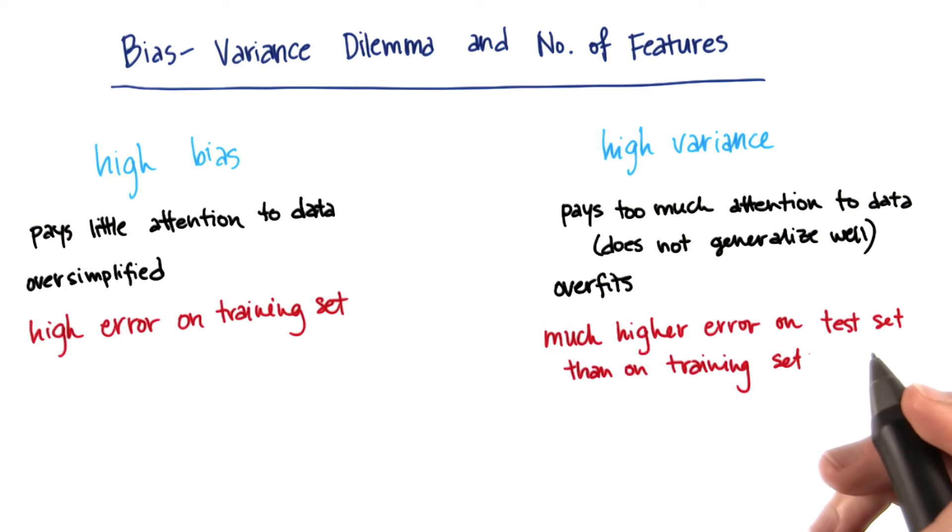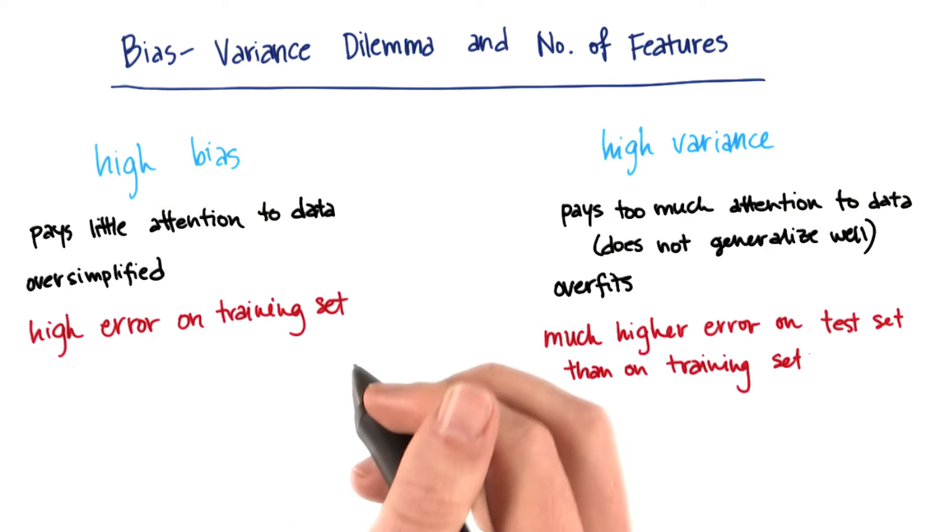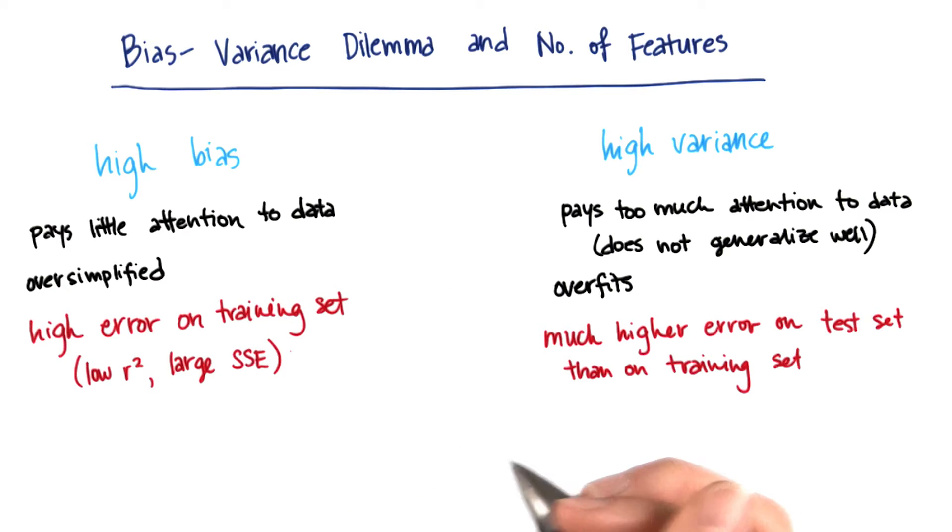Another thing that would be fair to say is that high bias algorithms tend to have high error on the training set. So in the case of a regression, for example, this would mean a low r² value or a large sum of squared residual errors.